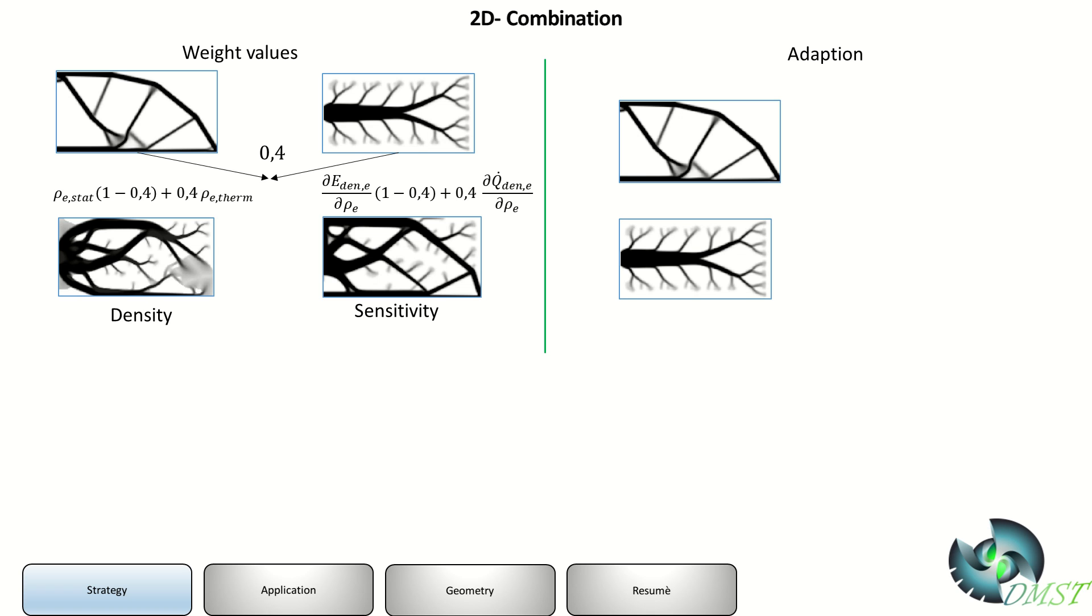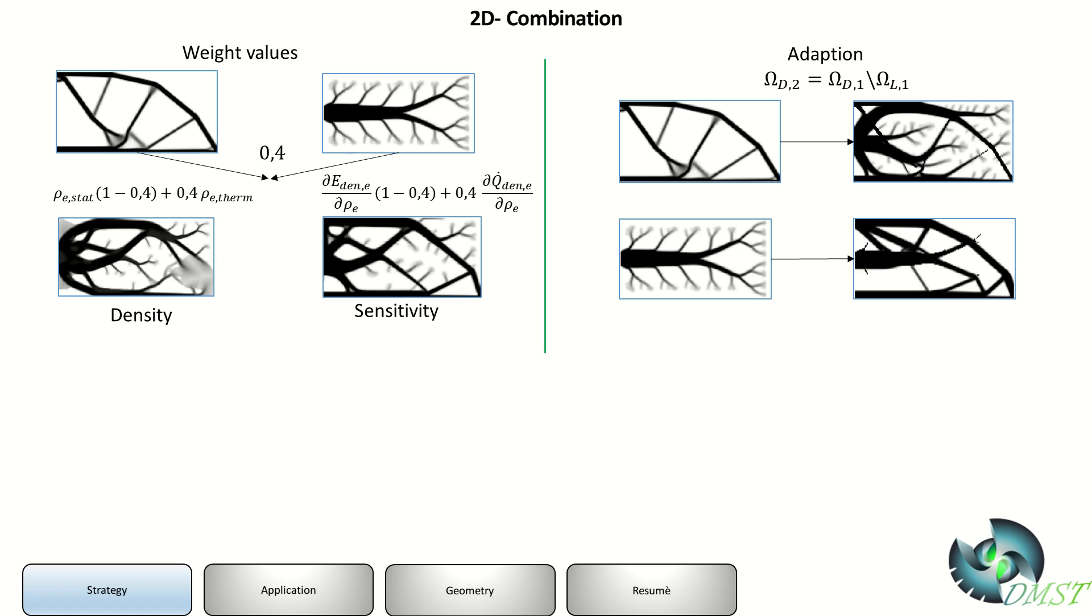The second one is adaption. I have an existing part or model and I want to add some new good properties. This means I use the old structure and add some new material on places where it should be. If you do it on a static load case, we get some tree structure around the whole old structure. If you do it on the thermal load case, well this one doesn't look really nice.